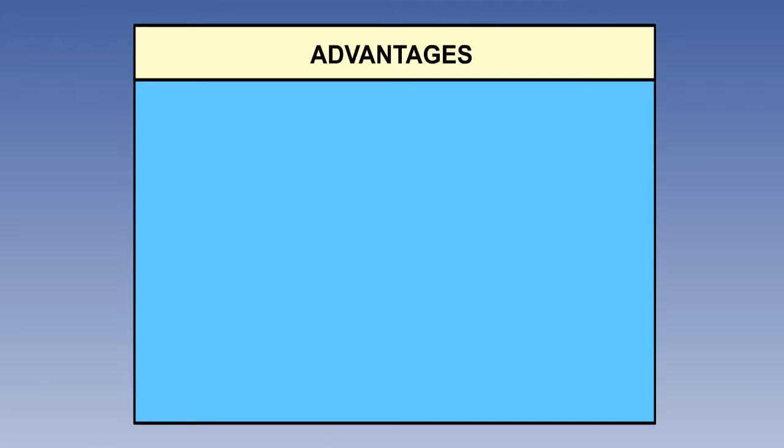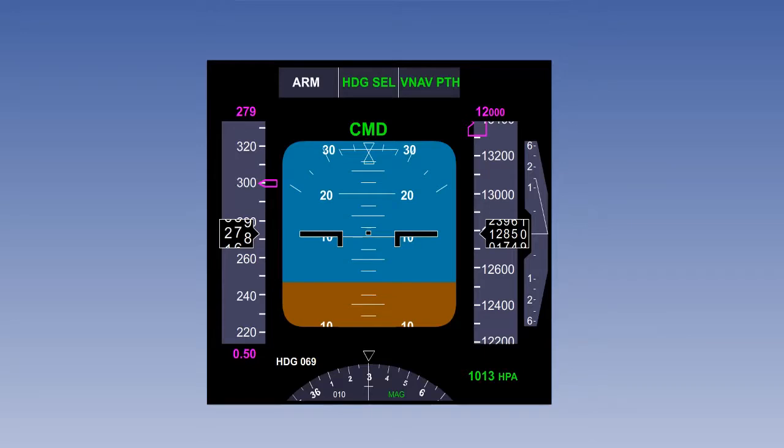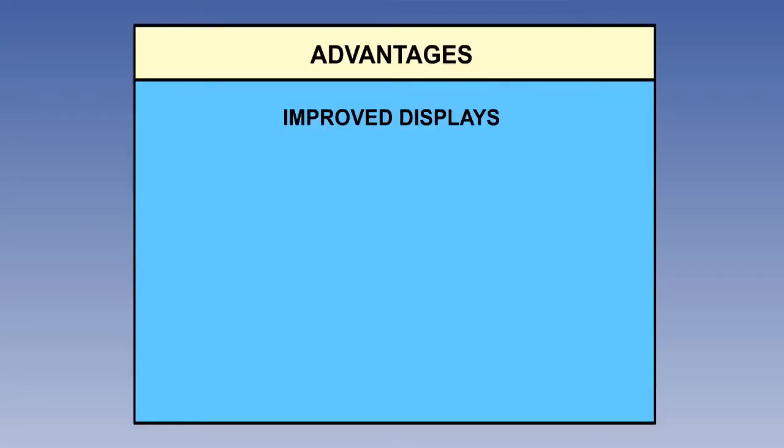The air data computer has many advantages over previous separate pitot static instruments. One of them is an improvement in displays. The electric or electronic instrumentation allows the manufacturer complete freedom to design new types of display which are clear and unambiguous. Instrument error can be reduced. In fact, with modern systems it is virtually eliminated. Errors due to friction and mechanical design do not apply to electronic systems.